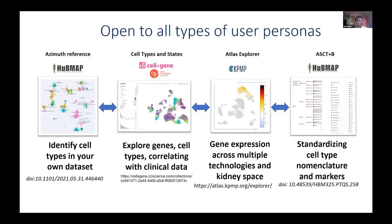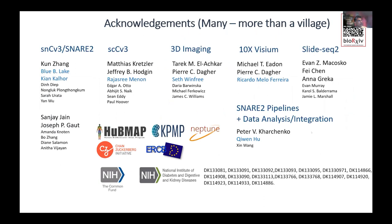This atlas tells us about biology as well as disease states in the kidney. These can be accessed through different resources: Azimuth in HubMap, CellxGene from CZI where anyone can type their favorite gene and see where it's expressed, KPMP Explorer for gene expression across multiple technologies in healthy and diseased individuals, and HubMap's detailed view of anatomical structures, cell types, and biomarkers that standardizes nomenclature across different consortia.